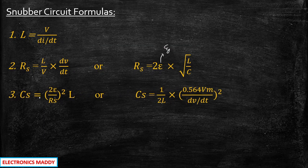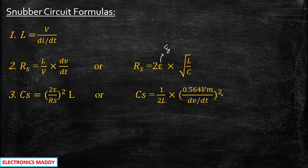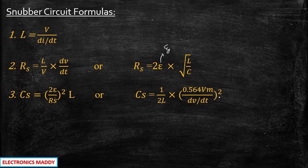RS is given by (L/V) × (dV/dt), or RS = 2ζ × √(L/C). The third important formula is CS = (2ζ/RS)² × L. There is another expression for CS — very important to solve problems when the value of zeta is not given: CS = (1/2L) × (0.564×Vm / (dV/dt))². Please make a note of these three formulas.